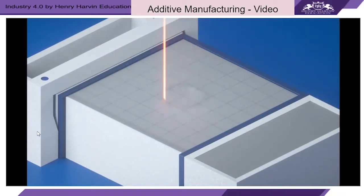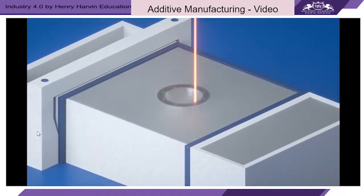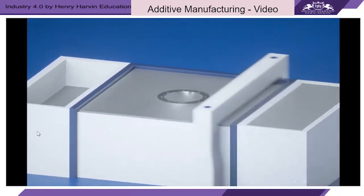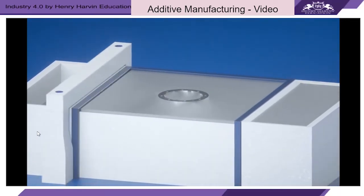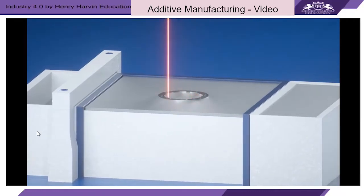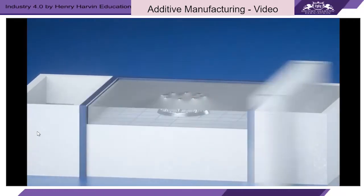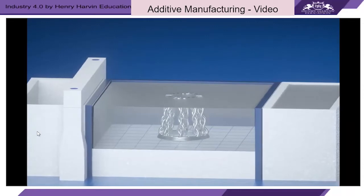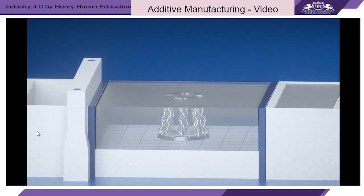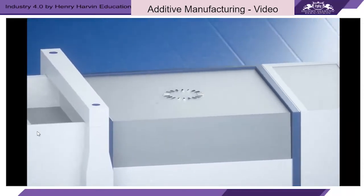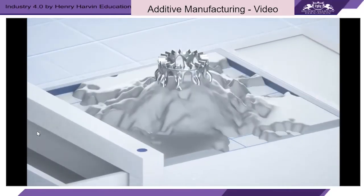A heat source such as a laser or electron beam then melts the first layer of the 3D design. The platform is lowered and another layer of metal powder is spread across the platform. The layering and melting process is then repeated until the part is complete. The metallic powder is removed and a physical object is revealed.